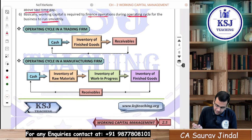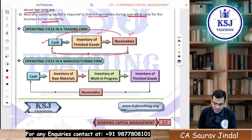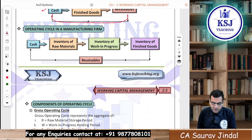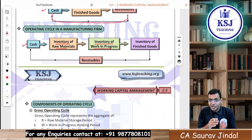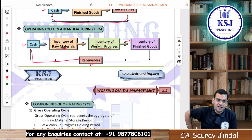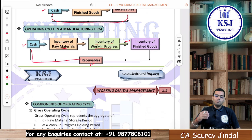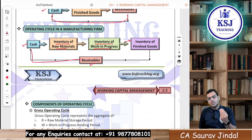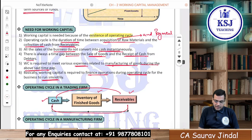Operating cycle for a trading concern: cash → inventory of finished goods → sell on credit (receivables) → receipt of cash, and the circle continues. Operating cycle for a manufacturing firm: cash → inventory of raw material → WIP → finished goods → sales → receivables → receipt of cash. During that entire operating cycle, what we need to meet day-to-day expenses is working capital.